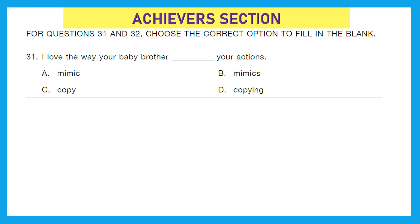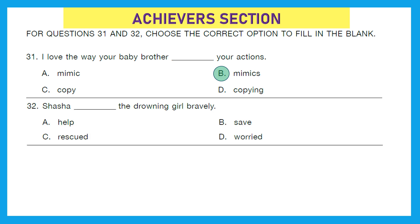Moving to the next section — our last section — which holds double marks for each question. For questions 31 and 32, choose the correct option to fill in the blanks. Question 31: 'I love the way your baby brother dash your actions.' The right answer is option B, mimics, because baby brother is singular so the verb takes an -s ending. Question 32: 'Chasha dashed the drowning girl bravely.' Options are: helped, saved, rescued, or worried. The right answer is option C, rescued — it is the most suitable verb, meaning to protect someone from something bad or dangerous.